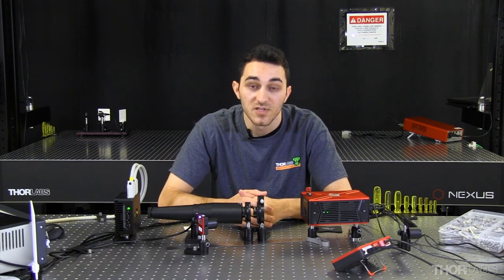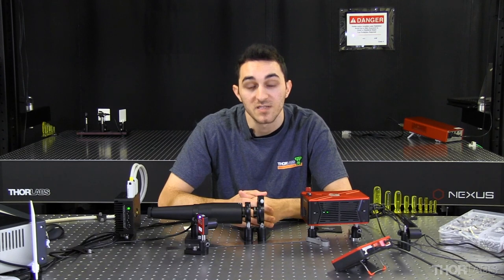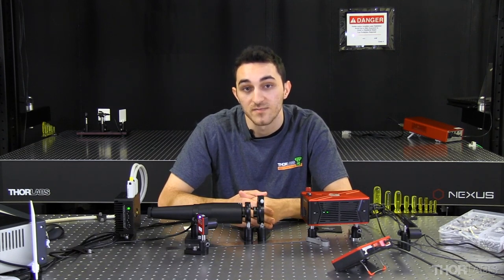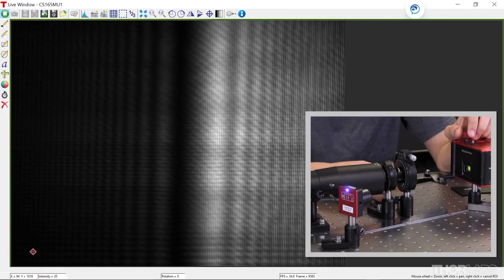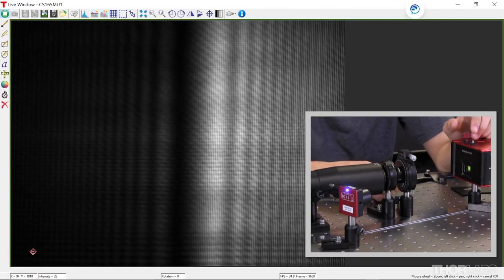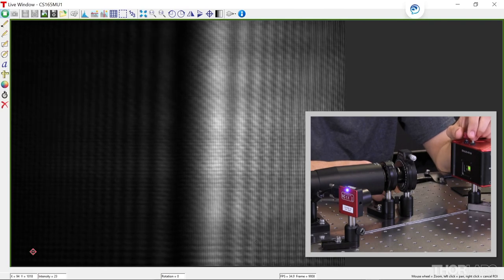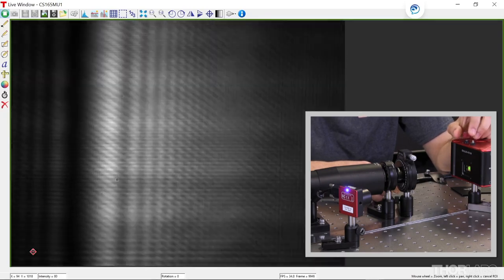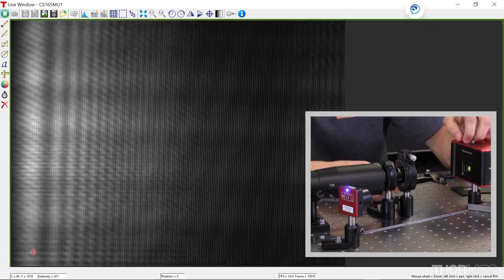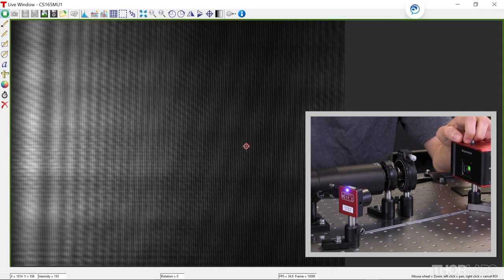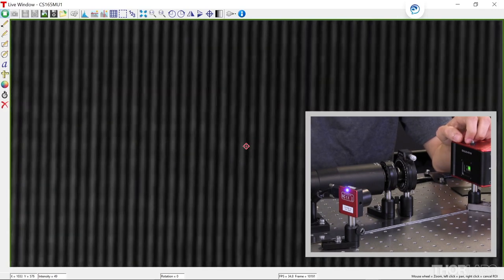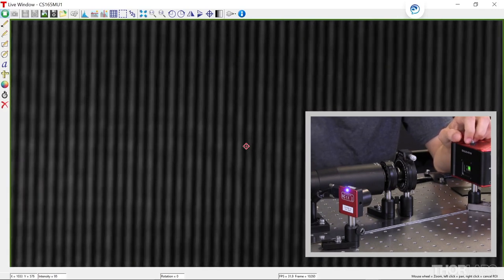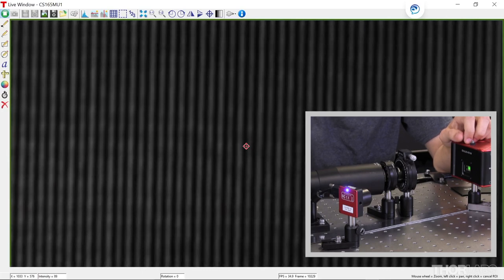Next, I'm going to adjust the tip tilt of the SLM display so that the overlap region is centered on the camera. While these fringes are very bright, they do not have a uniform period, which is necessary for analysis. Adjusting the horizontal adjuster and zooming in on this part of the image, I can see that the fringes have uniform period, which is exactly what I'm looking for.